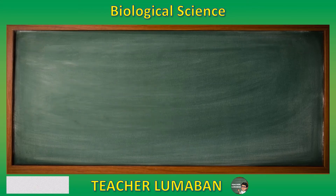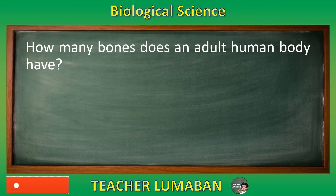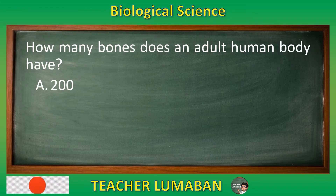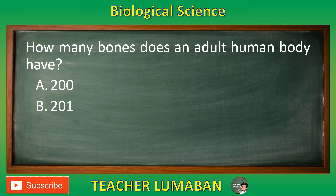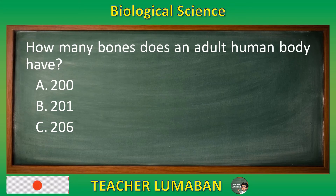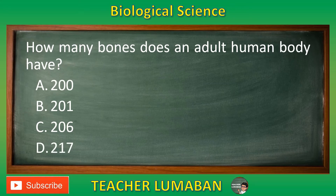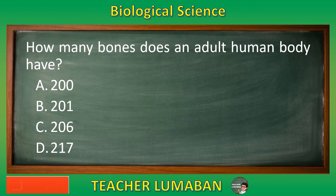How many bones does an adult human body have? Letter A: 200. Letter B: 201. Letter C: 206. Letter D: 217. Choose the suitable answer based on the given choices in 5 seconds.